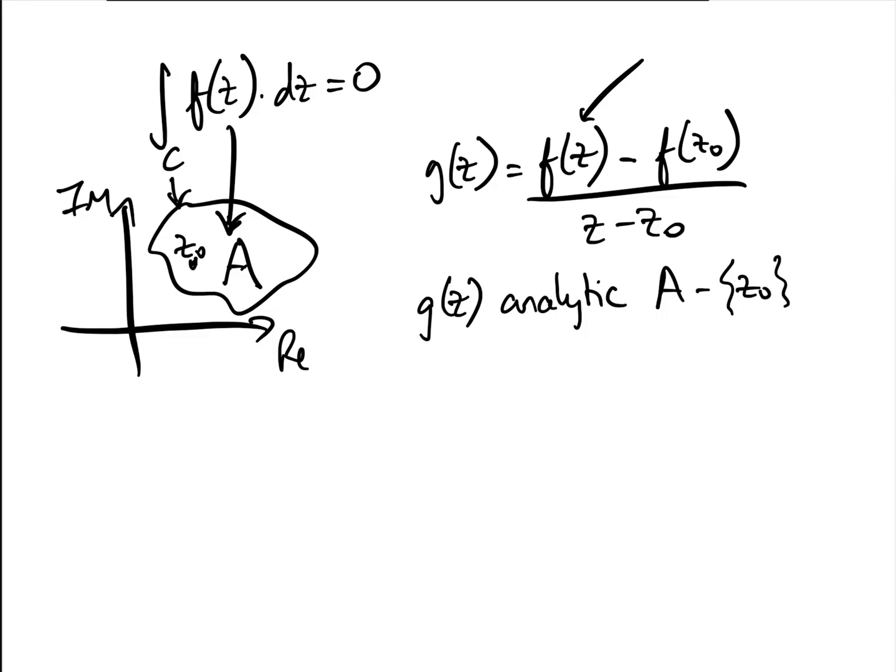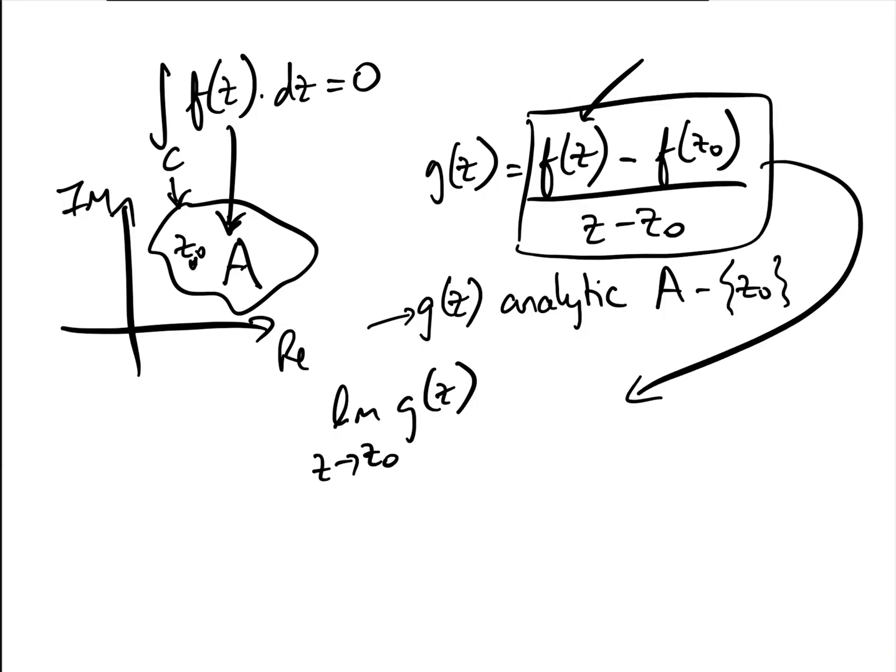So basically, what we've got to look at is how do we work out whether g of z is defined at z0. Well, let's have a look at the limit of g of z as z approaches z0. Well, the limit of g of z as z approaches z0 is basically this limit here, which by definition of derivatives is equal to the derivative of f of z, i.e. f dashed of z. But we have already said that f of z is analytic everywhere, i.e. differentiable, infinitely differentiable, everywhere on the region A. Therefore, this exists, and therefore g of z0 exists as well. And therefore, g of z is analytic all over A, because we know that it exists at z0, because of the way that we've defined it.